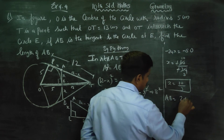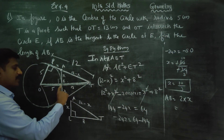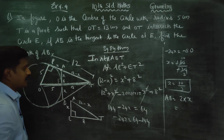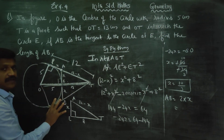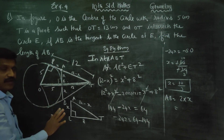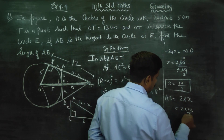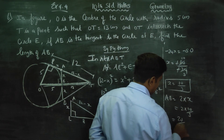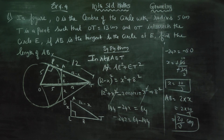AB is equal to 2 times x, and we already have x equals 10 by 3. So AB equals 2 times 10 by 3, which gives the final answer: AB equals 20 by 3 cm. If you have a fraction, you can write it as such. Thank you.